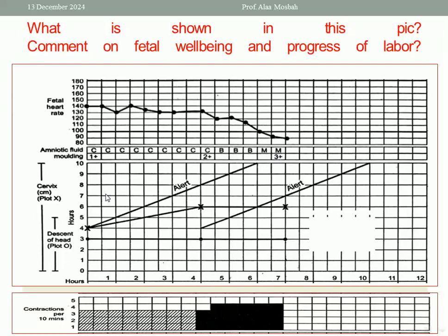What about the progress of labor? Progressive labor includes cervical dilatation — the letter X denotes the cervical dilatation at each moment — and this is the curve for cervical dilatation. The letter O represents head descent, and this is the curve of head descent. As you see, it is a straight line. How many contractions per 10 minutes? As you see, three squares become colored at the end — three to four contractions per 10 minutes.